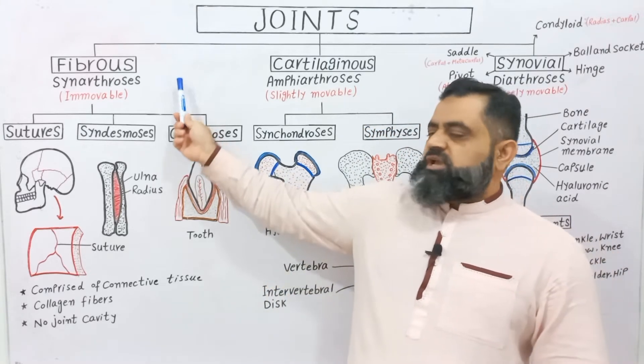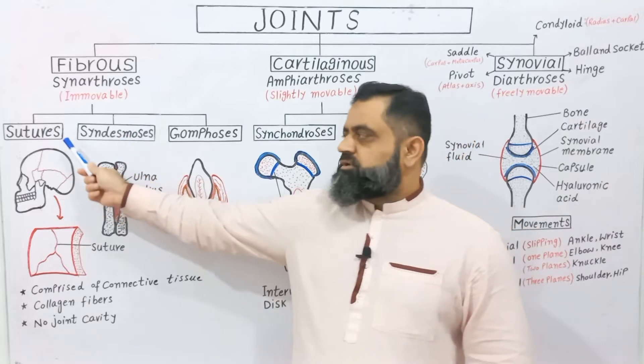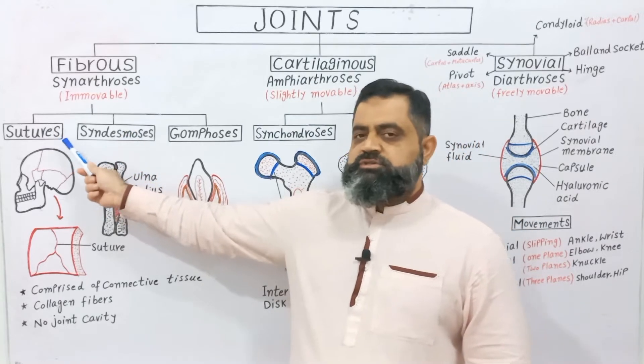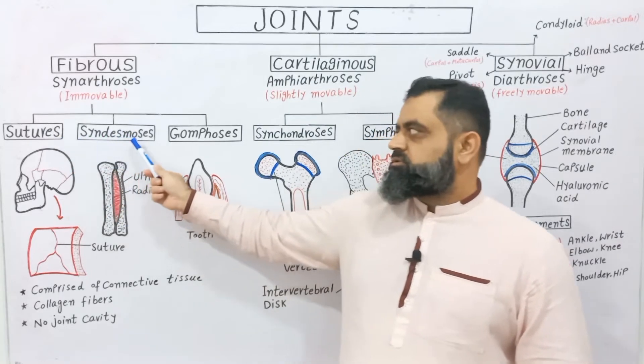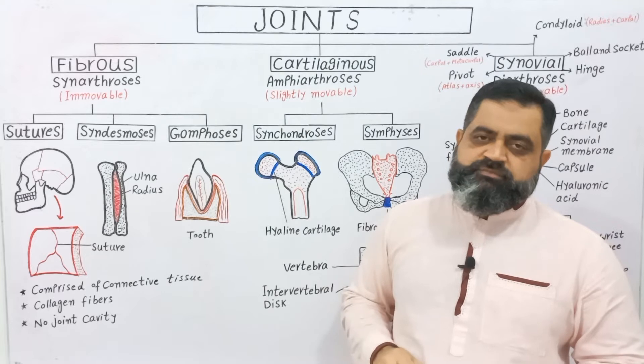Fibrous joints can be classified into three groups: sutures, syndesmosis, and gomphosis.